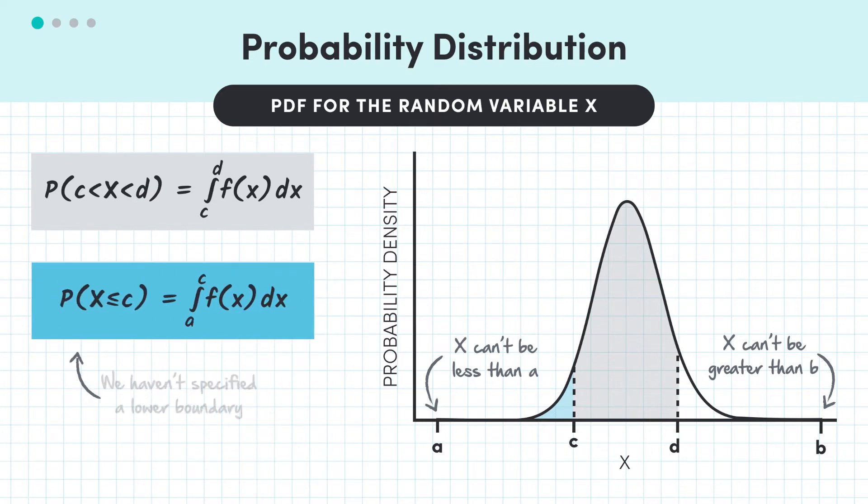Here, the difference is that we're not specifying the lower boundary, it's just the end of our acceptable interval. We're looking for the probability that X can take any value less than c.